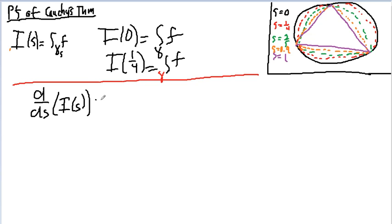And we're going to show that this is equal to 0. And if I show that a function has derivative of 0, that means it's constant. If it's constant, that means that the integral is the same at all these different levels. In particular, it means that the black is the same as the purple, which is what we want to show. So we show that if two things are homotopic, then the integrals are the same.